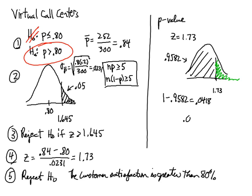So since 0.0418 is less than 0.05, we reject H0. So running the test with a test statistic compared to a critical value, which we did first, or running it with a P-value will yield the same result.